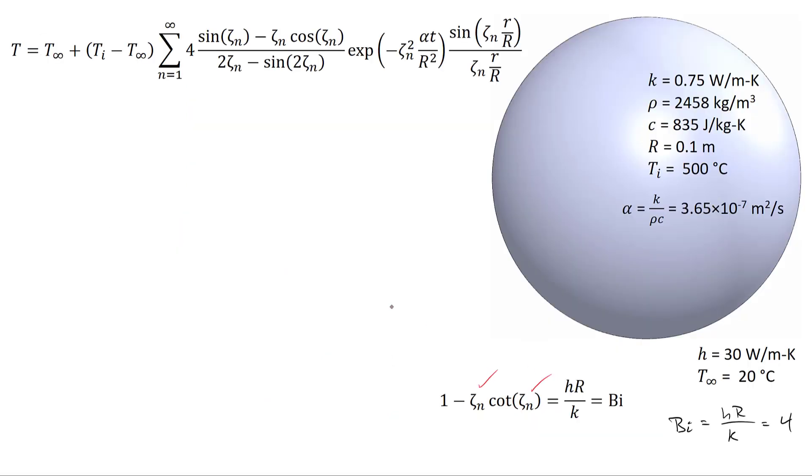Coming back to the analytical expression, once you've calculated a whole bunch of values of zeta, we can then import those into the summation. And now we're in a position—we know alpha, we know the radius of the sphere, we know the initial temperature, we know the ambient temperature. At this point, at any moment in time, we could solve for the temperature at any value of r.